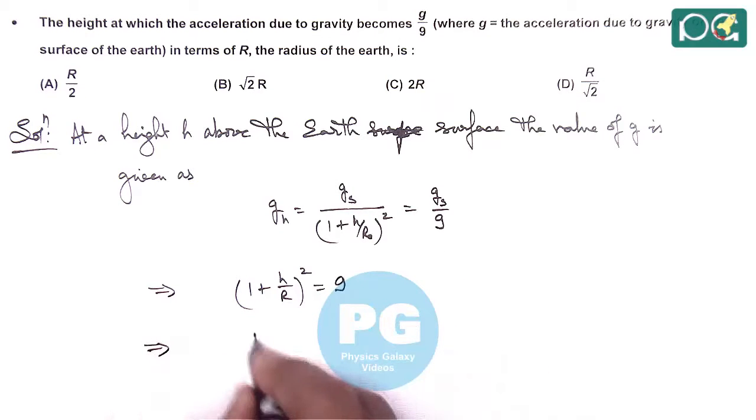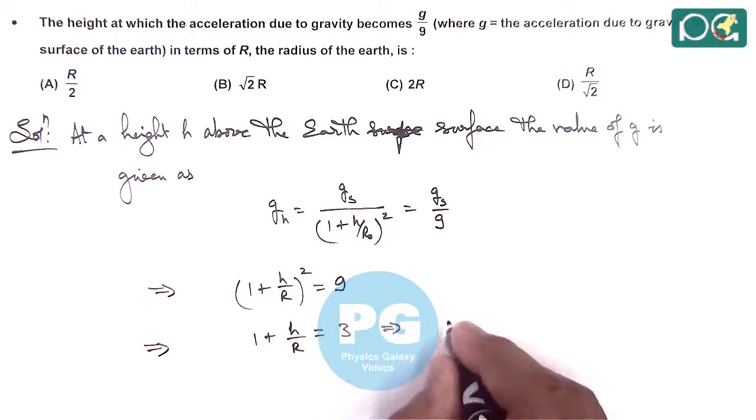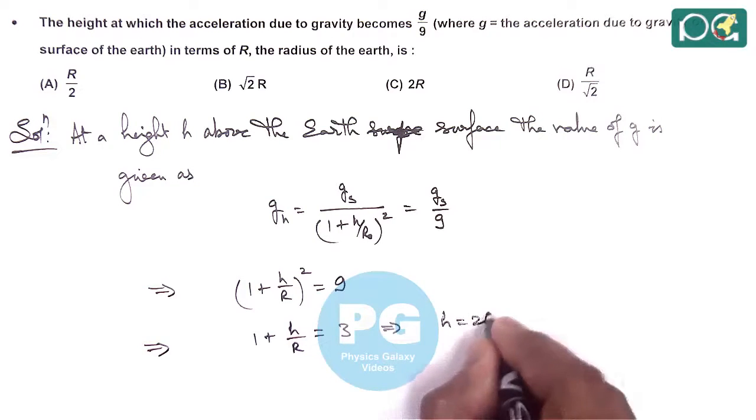So further simplifying this gives 1 plus h by r is equal to 3. And simplifying this gives us the value of h is equal to 2r.